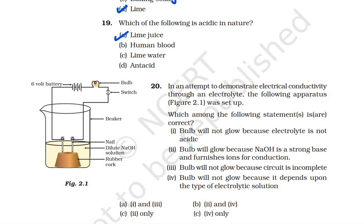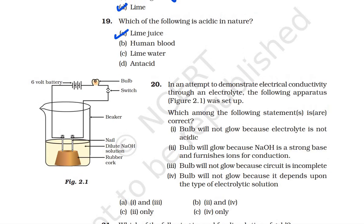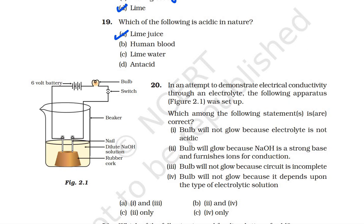Question 20: an apparatus is set up to demonstrate electrical conductivity through an electrolyte. The first statement — bulb will not glow because the electrolyte is not acidic — is not true, because whether acidic, basic, or salt, the bulb can glow. The second statement — bulb will glow because NaOH is a strong base and furnishes ions for conduction — is true, because ions create conductivity. So option C is the answer.